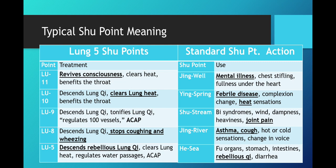Now relating this to the lung channel's five shu points: Lung 11 is the Jing Well point for the lungs — it revives consciousness, clears heat, and benefits the throat, and treats mental illness, chest stifling, and fullness under the heart. We can relate consciousness to mental. Lung 10 is the Ying Spring — it descends lung qi, clears lung heat, and benefits the throat, treating febrile disease, complexion change, and heat sensations, which we can relate to clears lung heat.